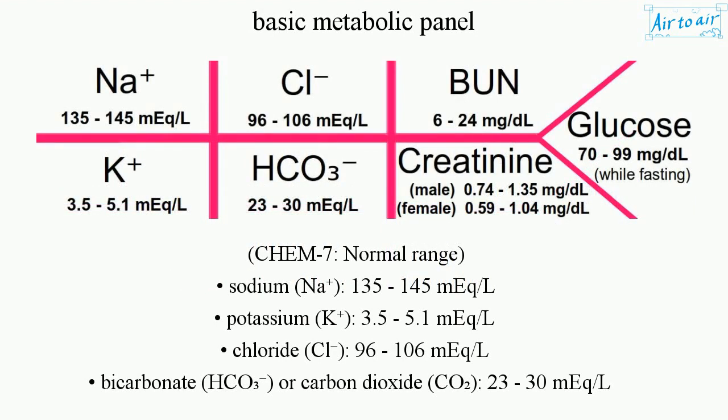CHEM-7 Normal Ranges: Sodium (Na) 135–145 mEq/L; Potassium (K) 3.5–5.1 mEq/L; Chloride (Cl) 96–106 mEq/L; Bicarbonate (HCO3), or Carbon Dioxide (CO2), 23–30 mEq/L.